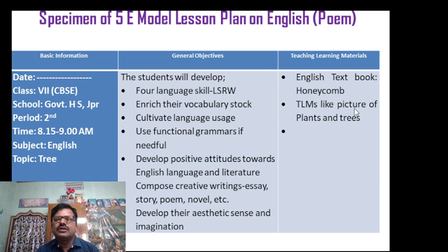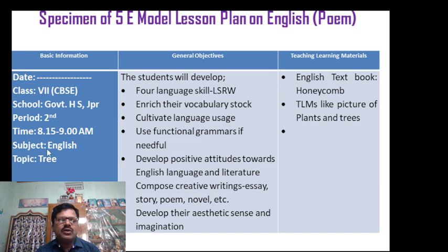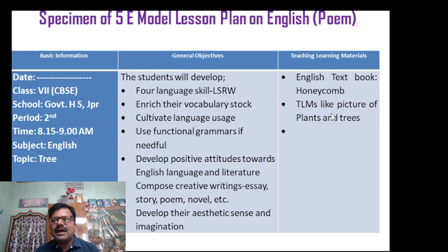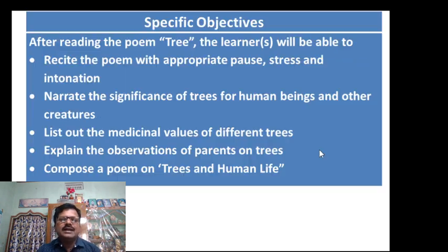Students should also develop their aesthetic sense and imagination. These are the general objectives to be written. Similarly, you have to note what sources are needed and what teaching-learning materials (TLM) will be used. For example, today we will discuss the topic 'Trees' from the CBSE Class 7 textbook 'Honeycomb.' TLMs like pictures of plants and trees will be used in this lesson plan.